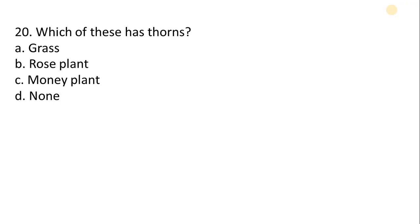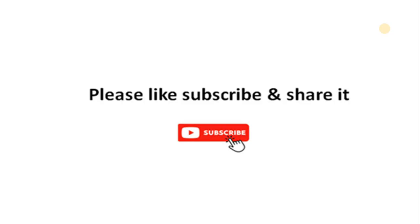Which of these has thorns? A. Grass. B. Rose Plant. C. Money Plant. D. None. Correct answer is option B. Rose Plant. Please like, subscribe, and share it. Thank you.